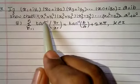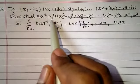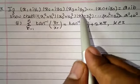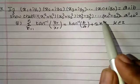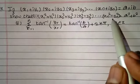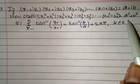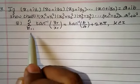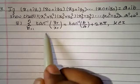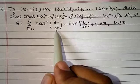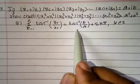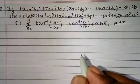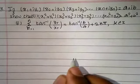then show that: first, (x1² + y1²)(x2² + y2²)(x3² + y3²)... (xn² + yn²) = a² + b². Second, summation r equals 1 to n of tan inverse of yr by xr equals tan inverse of b by a plus 2kπ, for all k belonging to Z.